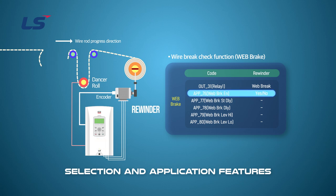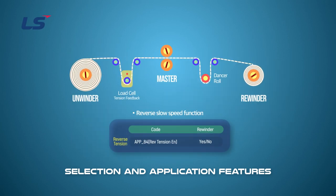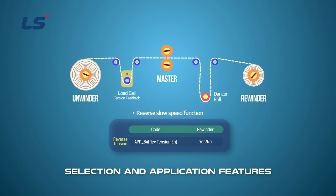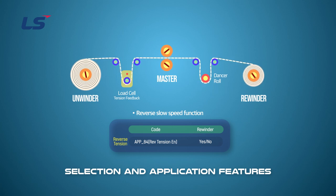You can disable this function in the preparatory operation stage and enable it in the actual web operation stage. The reverse tension enable function is used in systems without mechanical brakes. When the winder stops, the material stretches and tension feedback decreases. If you drive again in this state, it will be difficult to find tension instructions and cause defects in the product. It is a function that allows the motor to rotate backward by PID output to make the stretching normal, enabling smooth control because it starts while holding tension.